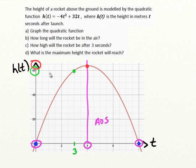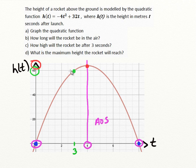So how could we actually find out the exact value of that height? We're going to take a look at each of questions B, C, and D and solve them without the graph — that is, algebraically — and that will give us precise answers, and hopefully confirm some of these answers, such as at 3 seconds the rocket was at 60 meters.